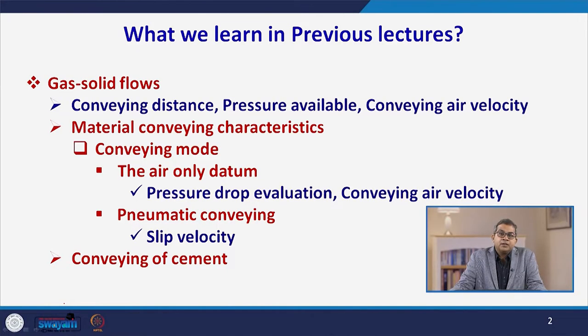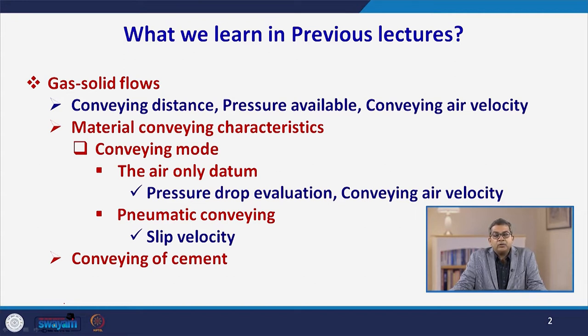Before we go into detail, we have already gone through gas-solid flow in which we discussed about the conveying distance, pressure available, and conveying air velocity. Then we discussed about material conveying characteristics including conveying modes and air-only datum, pressure drop evaluation, and conveying air velocity. We discussed about pneumatic conveying, slip velocity, and one example pertaining to the conveying of cement.